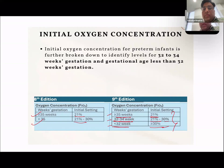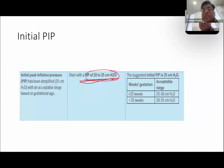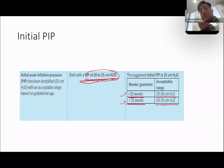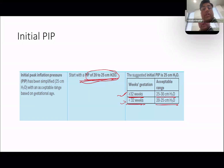Next, initial PIP requirement has also changed slightly. Previously initial PIP for all babies was 22 to 25 cmH2O. Now they recognize that premature babies have lower lung compliance and higher risk of ventilation-induced lung injury, so requirements differ by gestation. They now have two categories: if baby is more than 32 weeks, start from 25 to 30 cmH2O; if baby is less than 32 weeks, start from 20 to 25 cmH2O initial peak inflation pressure, then adjust for chest rise.